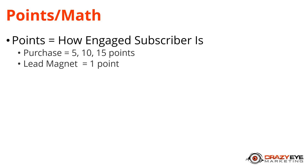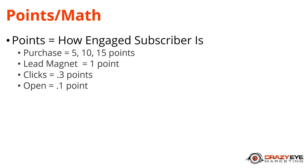You might also give people points when they request lead magnets — basically every time they enter contact information into a form on your website, maybe you give them a point or two. You might also give people points when they click on links in emails, maybe only 0.3 points. For opening emails, that might be only 0.1 points — one-tenth of a point. You might also do it based on page views, like if they go to your sales page they get half a point.